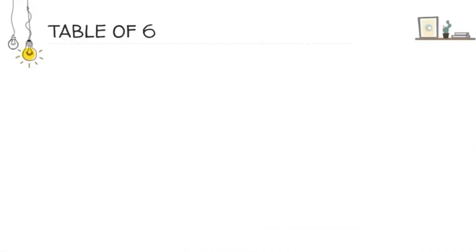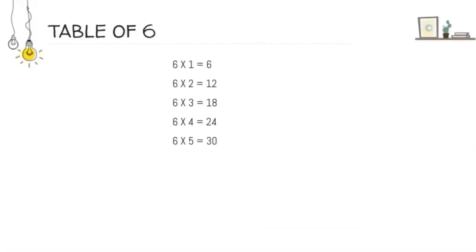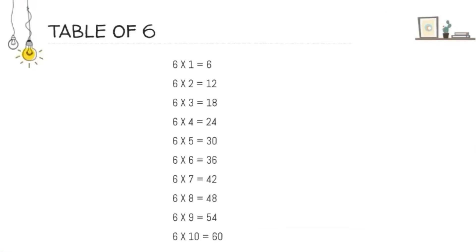Next one is table of 6. 6 1's are 6. 6 2's are 12. 6 3's are 18. 6 4's are 24. 6 5's are 30. 6 6's are 36. 6 7's are 42. 6 8's are 48. 6 9's are 54. And 6 10's are 60.